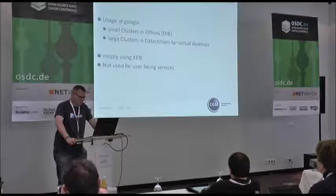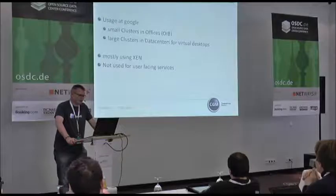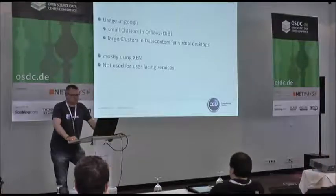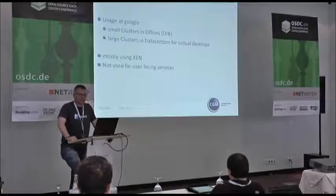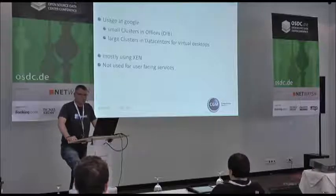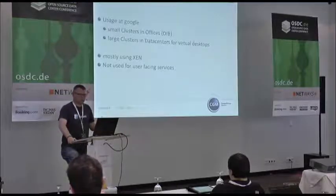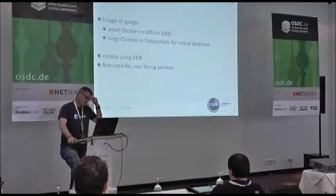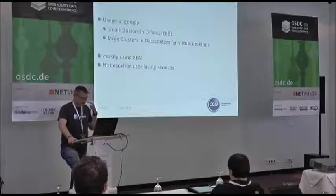Google uses Ganetti in all their offices — they call it 'Office in a Box': three to four nodes in all offices running low-latency services like proxy and DNS servers, plus some VMs for developers to use. They have large-scale installations for their virtual desktop infrastructure — every user has a virtual desktop. They mostly use Xen because the I/O performance of KVM was pretty bad. However, it's not used for user-facing services like Google Mail or Search, and not for the Google Compute Service.